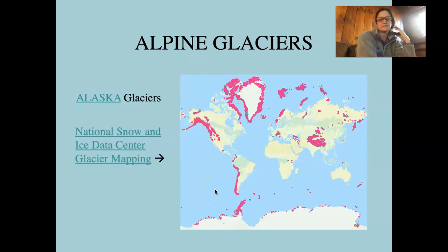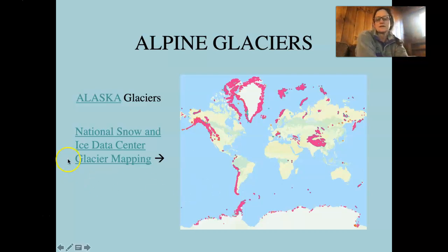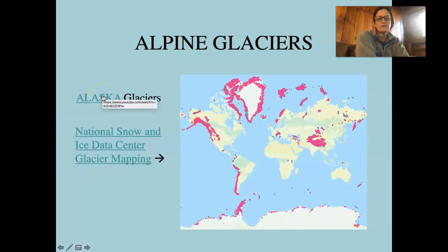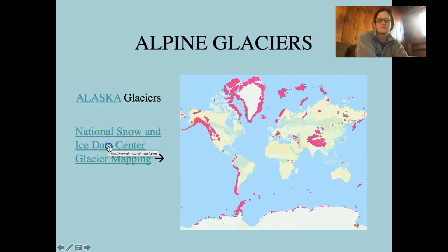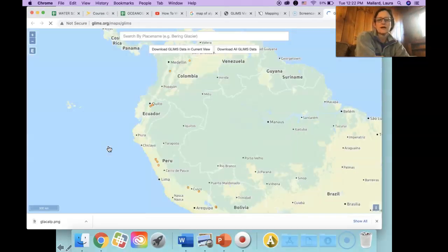The alpine glaciers are noted on this map, though they're way not to scale. This link here will take you to a great video about Alaskan glaciers, and this link here is going to take us to mapping these glaciers.